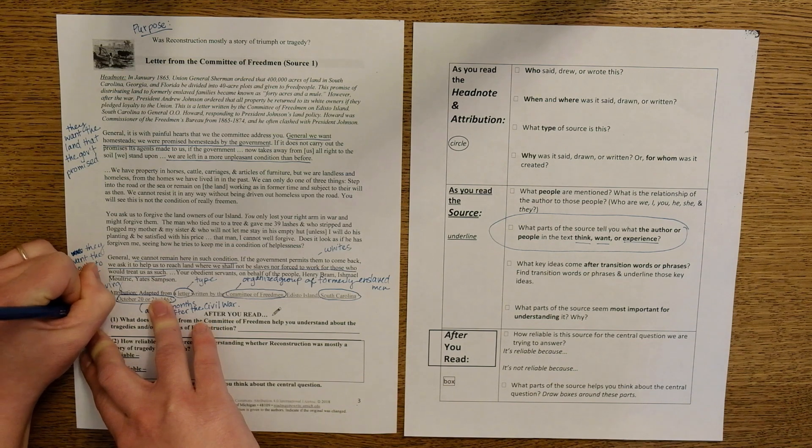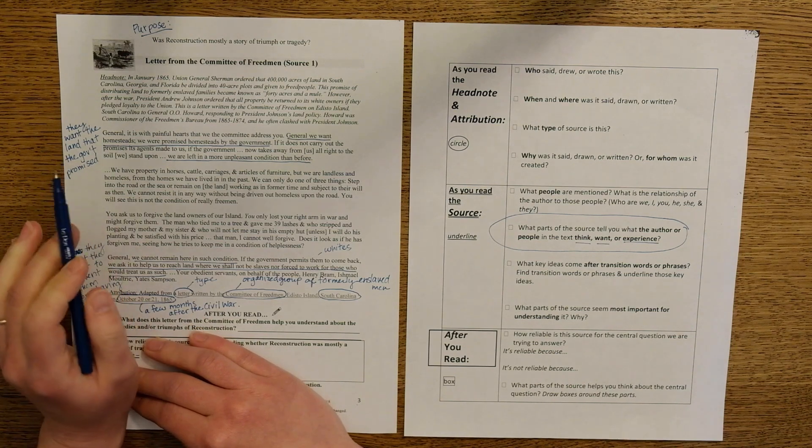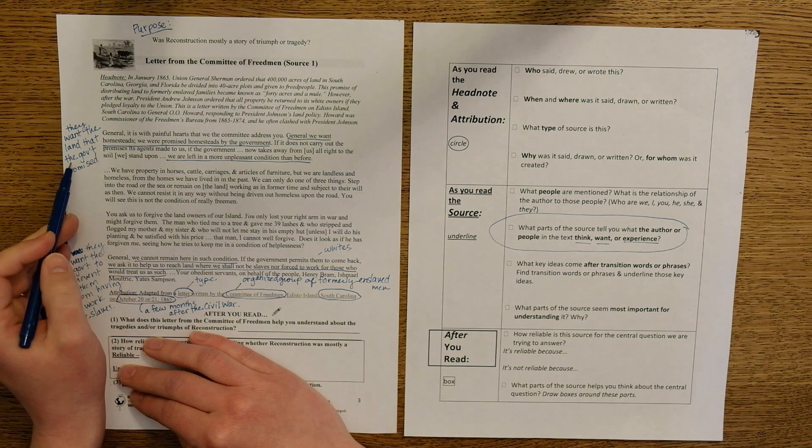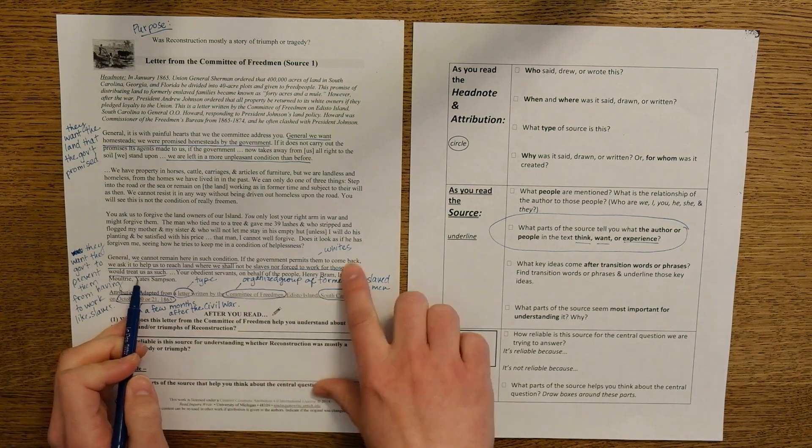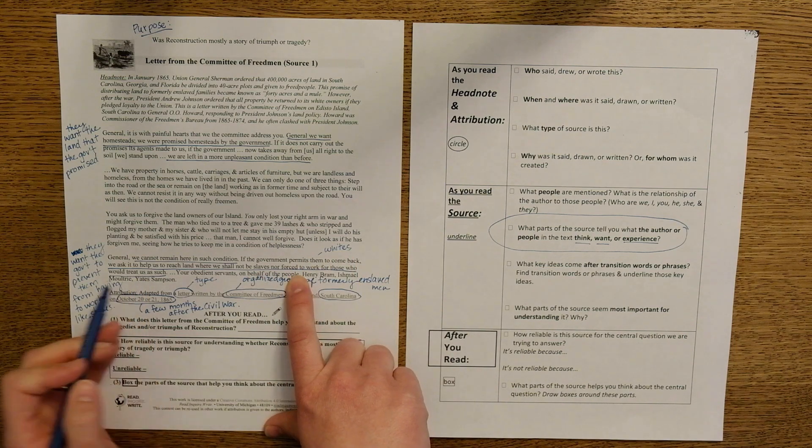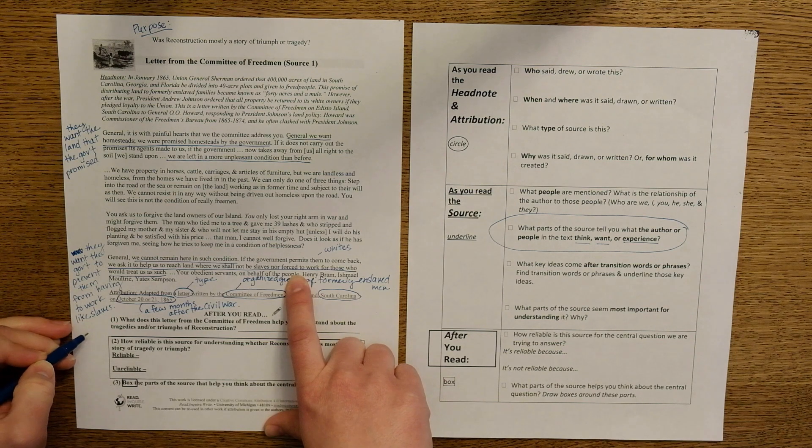It's connected to the ideas that they mentioned earlier, right? You know, they're saying to the government, you promised us land, you haven't given it to us. If you give it back to the white landowners, then we're going to be forced to work for them. And those people were our enslavers. They are going to treat us like slaves. So we want your help to prevent this from happening.